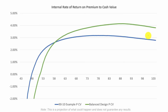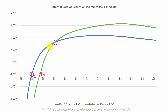Another way to look at this is the internal rate of return — the rate of return you would have to earn on the premiums for each policy in order to end up with the cash value. Once these lines cross the 0% mark, that happens at year 6 with the 90-10 policy and year 10 with the more balanced design — that's the break-even point. Then they switch places about 17 years in, so for the first 16 years the 90-10 policy seems more efficient, but long-term the balanced policy is more efficient.